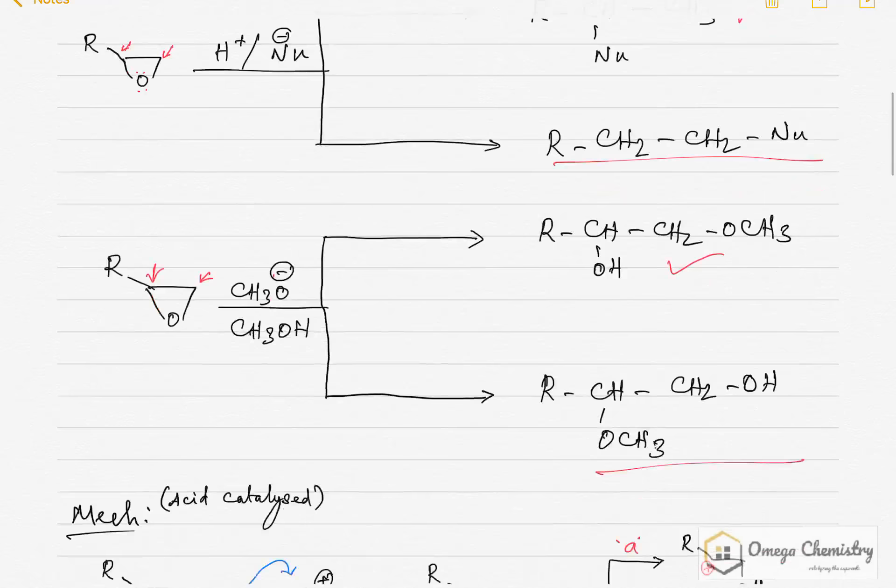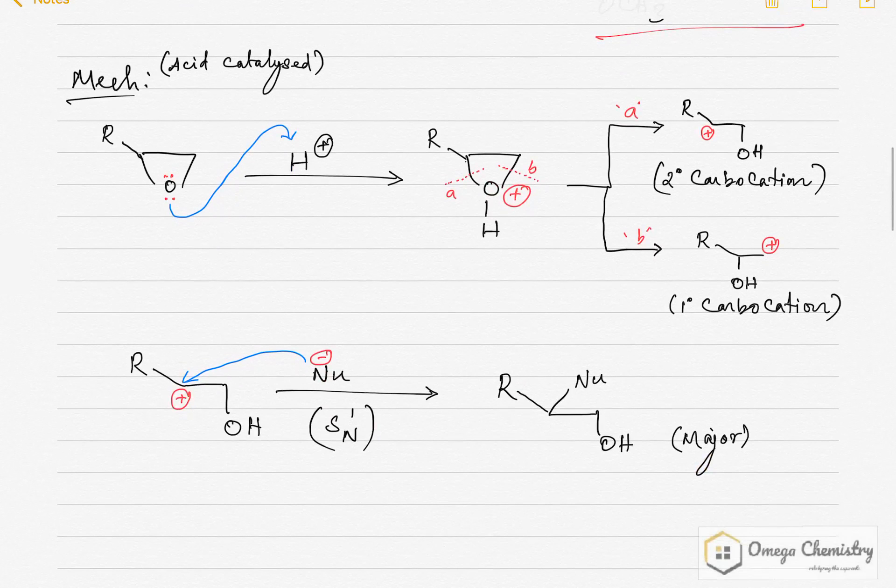So, the oxygen atom in epoxide will get protonated first and protonation is followed by ring opening. So, the ring can either open at this carbon and oxygen or this carbon and oxygen.